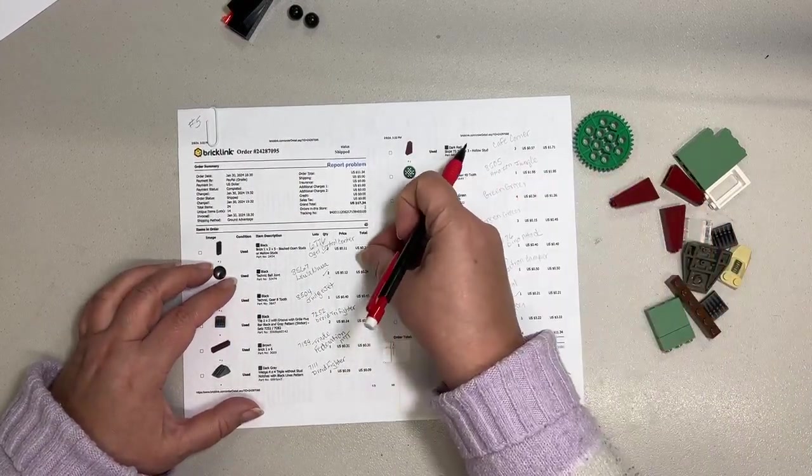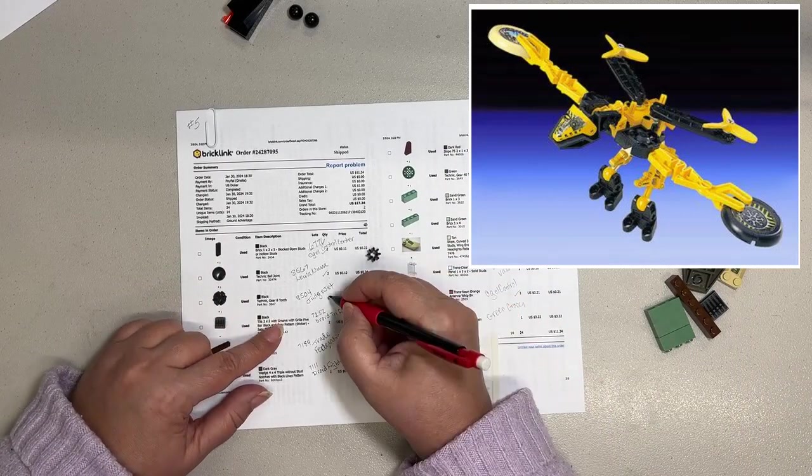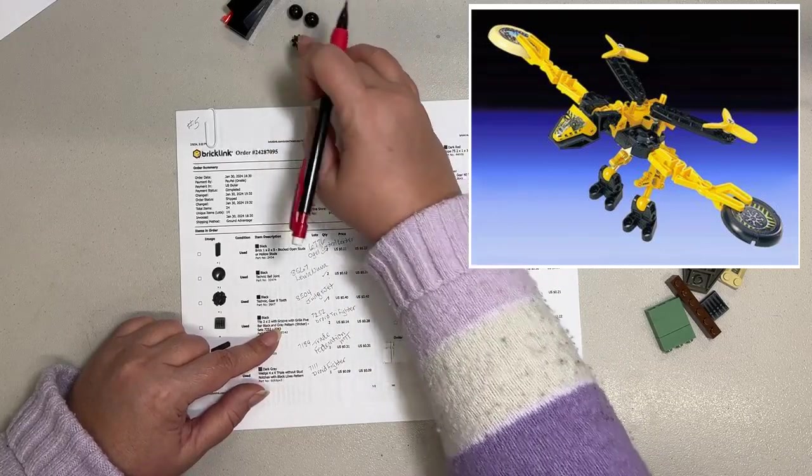This little gear is for, I believe, a Throwbot set, the Judge Jet, and I think I'm still missing one or two parts for that.